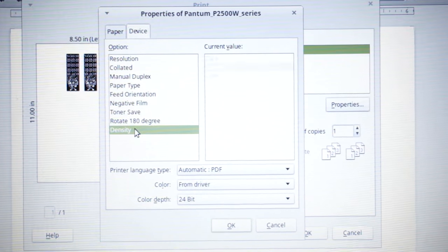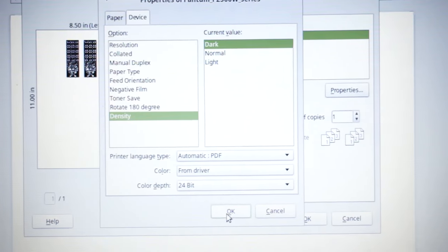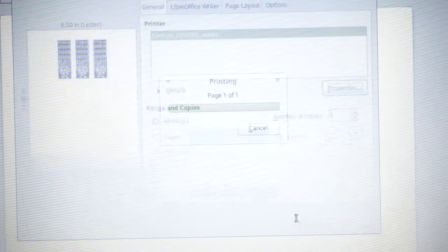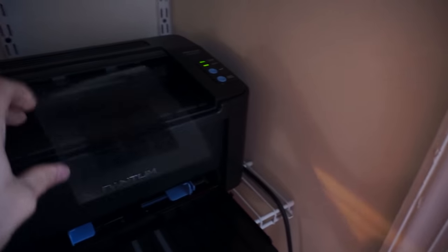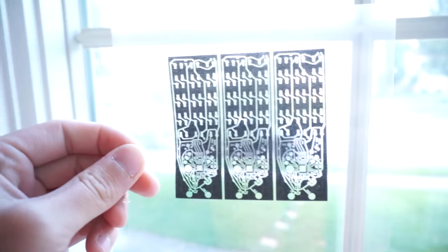I go set up to print and print as dark as I possibly can. The night is your friend. And in this case I'm using a $37 laser printer. This is a Pantom laser printer. It's really cheap and it produces great prints.